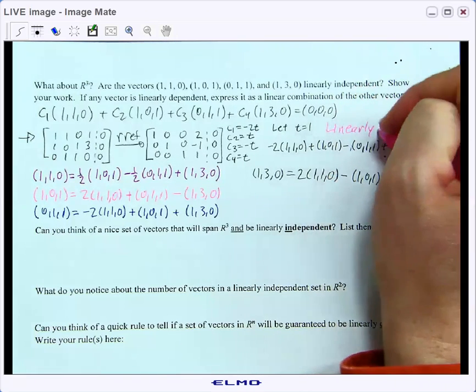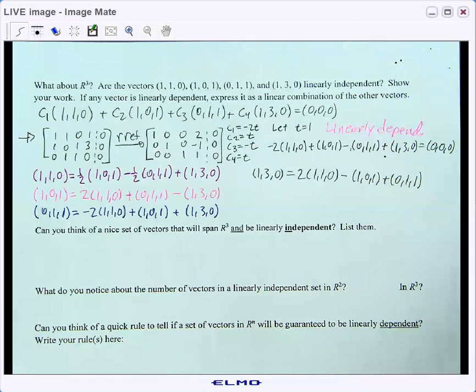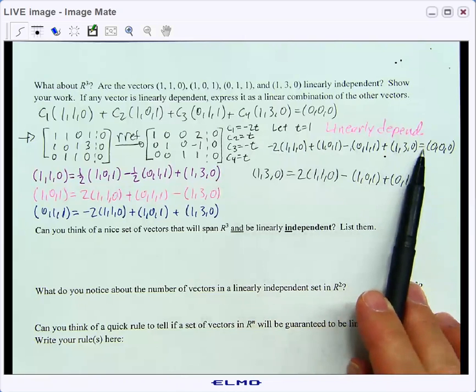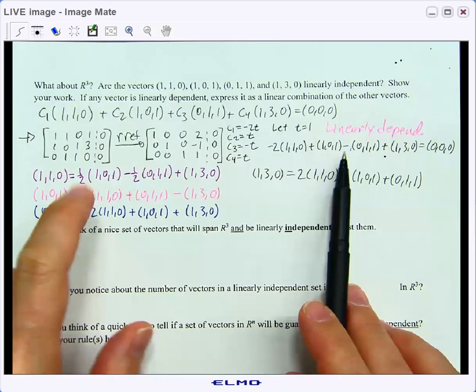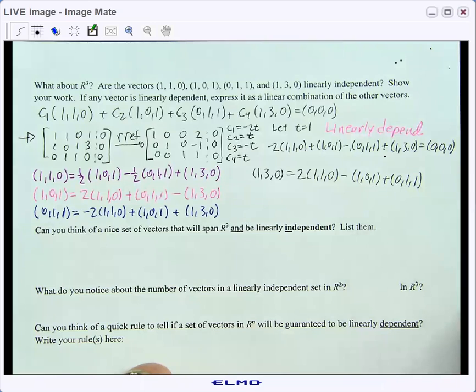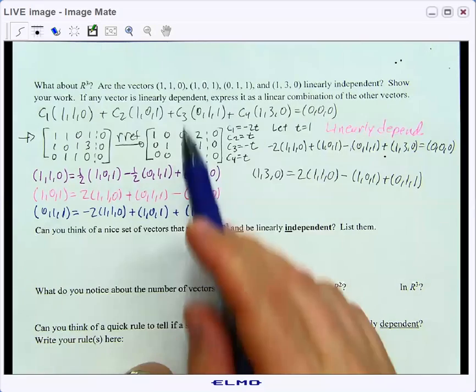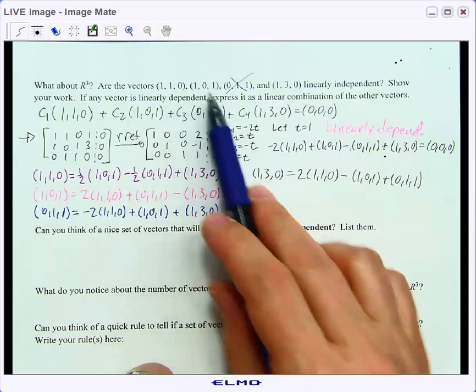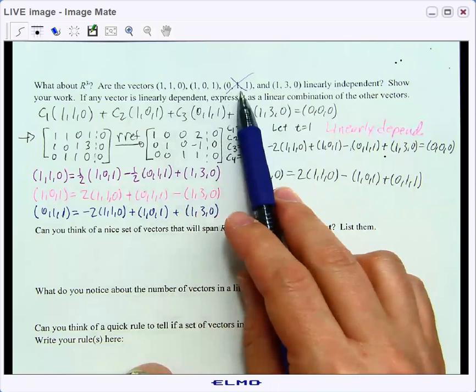And since they are linearly dependent, at least one of the vectors can be written as a linear combination of the other vectors. If I let t equal 1, I can write out this equation and then solve for any one of the vectors in terms of the other guys. So that shows that any one of these four vectors is linearly dependent on the rest, meaning I can cut out the first or the second or the third or the fourth. And if I cut out the third vector, I can still cover as much with the first, second, and fourth vector.